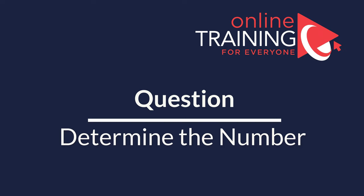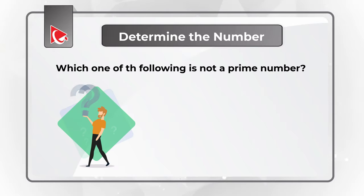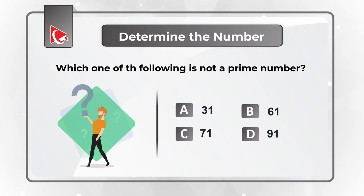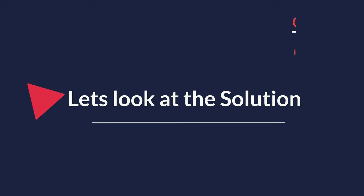Here's an interesting question where you're presented with a set of numbers and need to determine which one is NOT a prime number. Your choices are: A) 31, B) 61, C) 71, or D) 91. Take a moment to recall the definition of prime numbers and see if you can solve it.